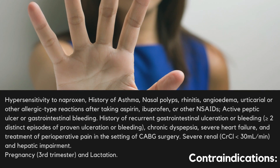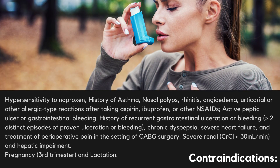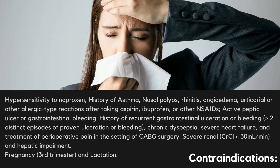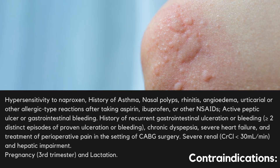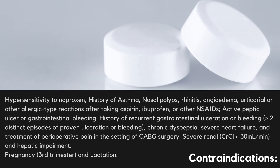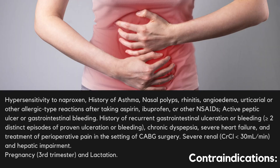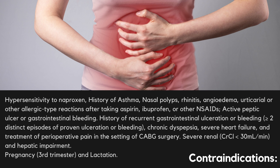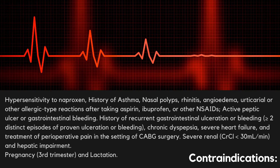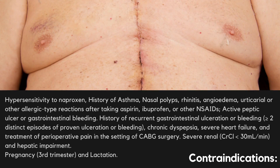Contraindications: Hypersensitivity to naproxen; history of asthma, nasal polyps, rhinitis, angioedema, urticarial or other allergic-type reactions after taking aspirin, ibuprofen, or other NSAIDs; active peptic ulcer or gastrointestinal bleeding; history of recurrent gastrointestinal ulceration or bleeding (greater than or equal to two distinct episodes of proven ulceration or bleeding); chronic dyspepsia; severe heart failure; and treatment of perioperative pain in the setting of coronary artery bypass graft surgeries.